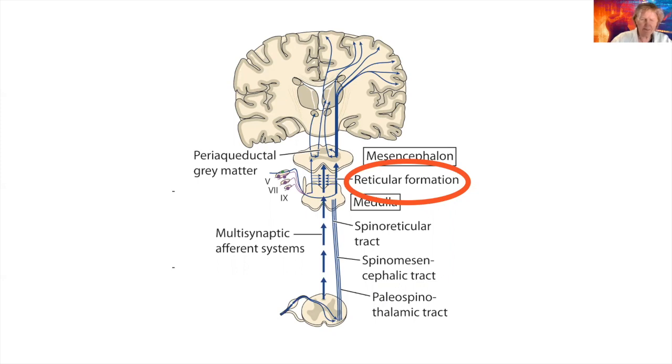The formatio reticularis includes a group of neuronal nuclei that transport serotonin, for example, such as the raphe nuclei. Others transport acetylcholine, adrenaline, GABA or dopamine. Thus providing all of this for the alertness of the brain, as well as the motivation and the memory functions, as the neuroscientist Dora Rigrodi explains.